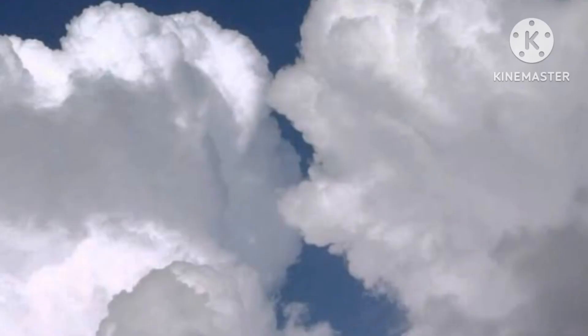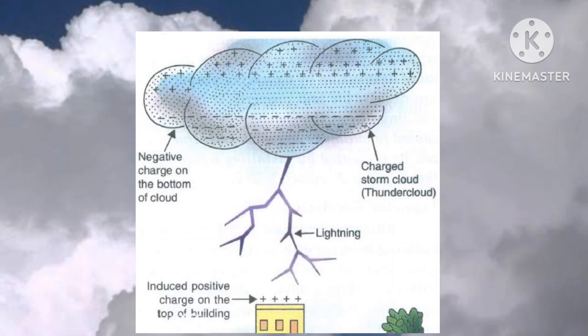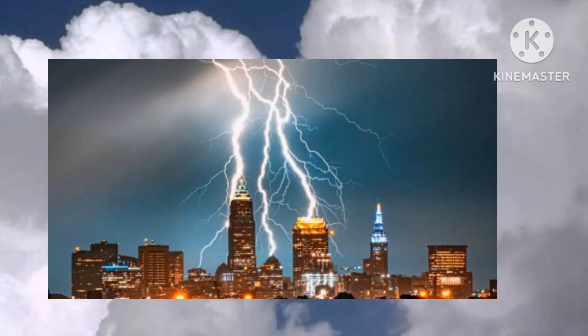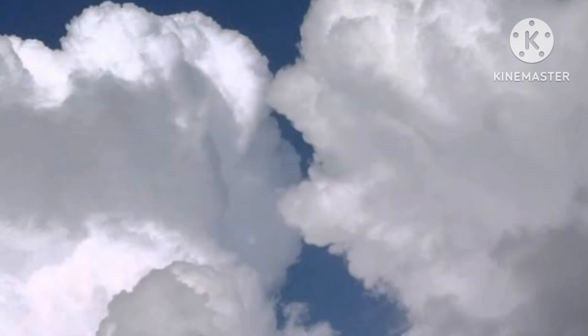When two clouds with unlike charges come near each other, a huge amount of energy is released in the form of heat, light, and sound during such a discharge. This is the lightning you see and the thunder you hear during a storm. Clouds can charge tall buildings and trees by induction with the opposite charge. If the buildup of charge is very heavy, a discharge can occur between the cloud and the tree or building — this is called a lightning strike. The huge amount of energy released can even result in the building or tree catching fire.